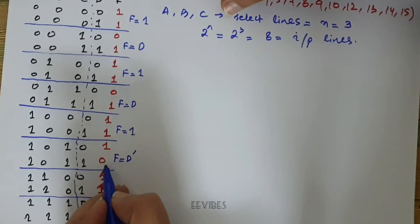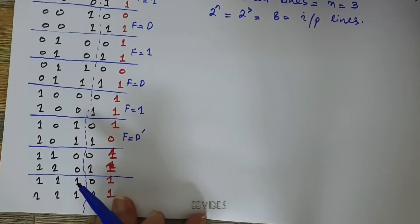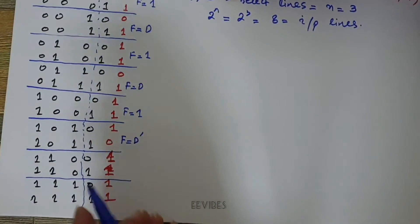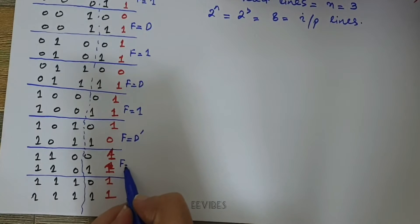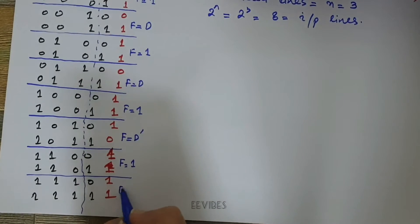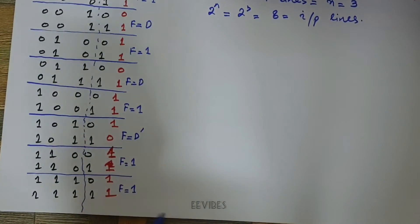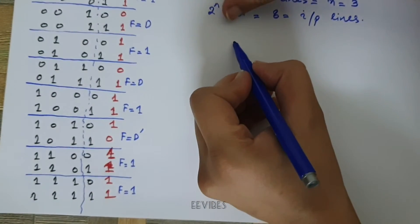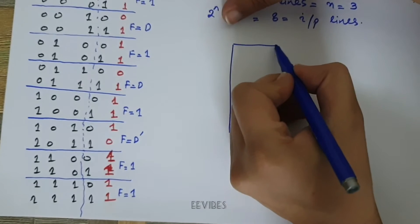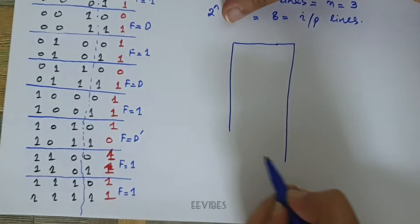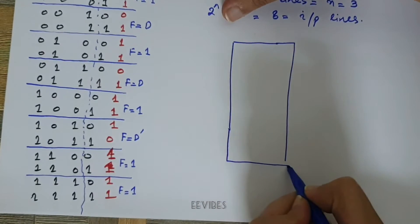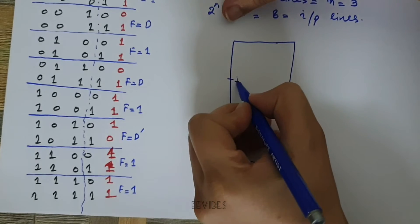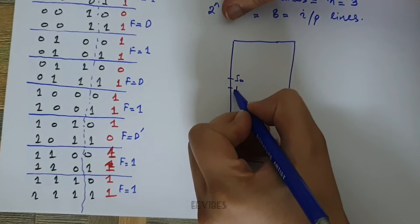equal to 0. F is equal to 0. For the remaining outputs you can write that F is equal to 1 and F is equal to 1. So F is actually most of the times constant. In this case we will be using again an 8-to-1 line mux. Here you will have 8 input lines starting from I0,